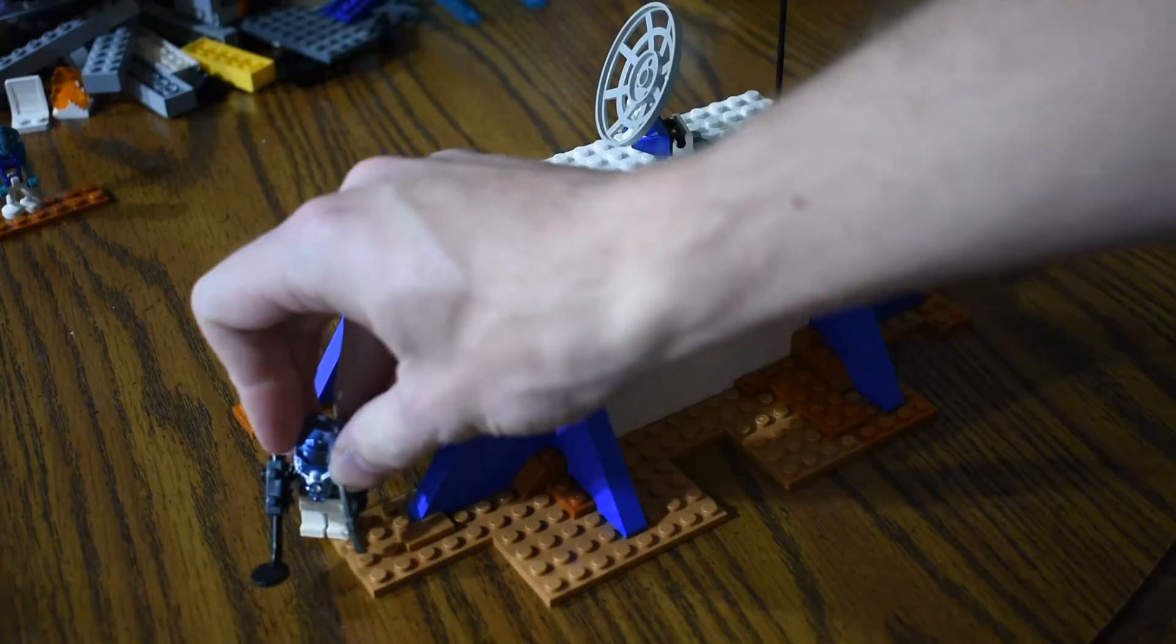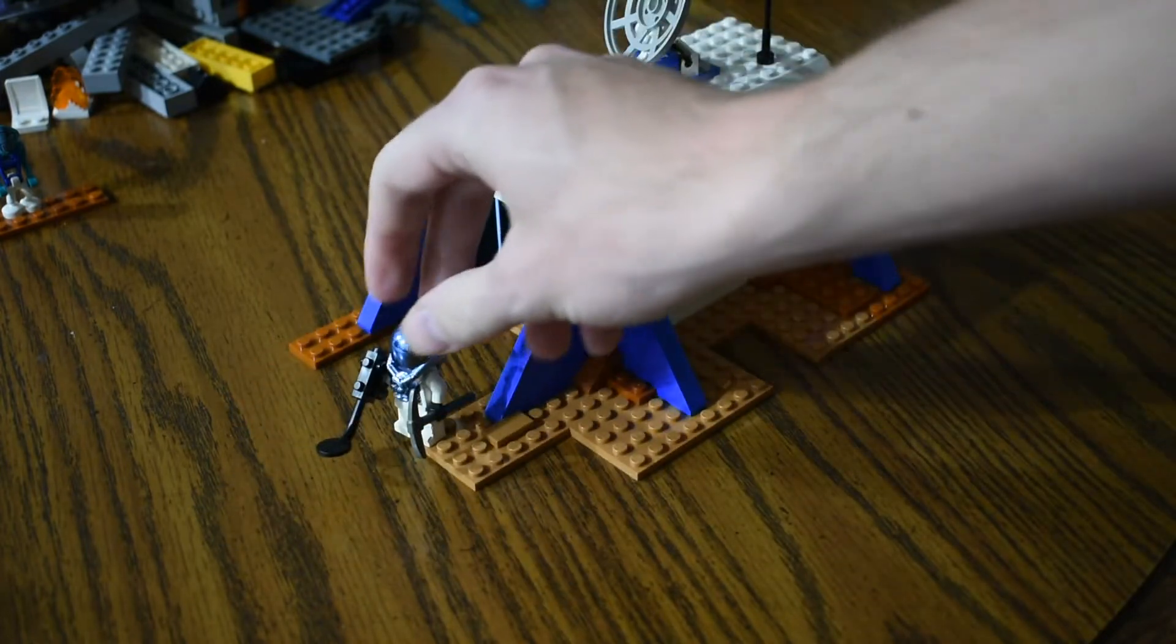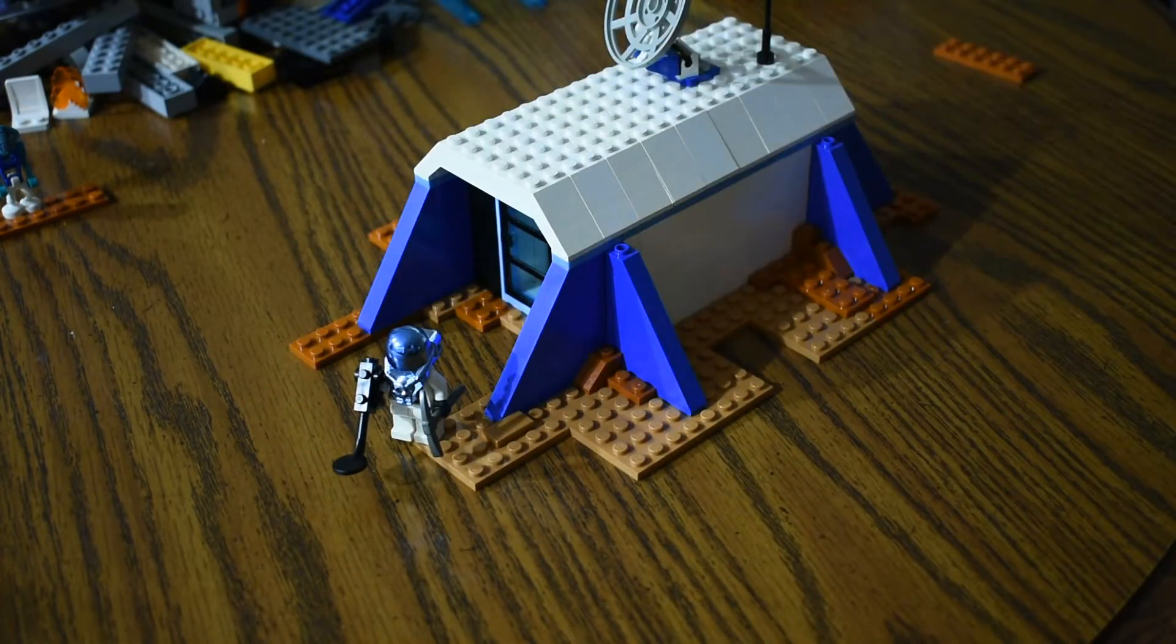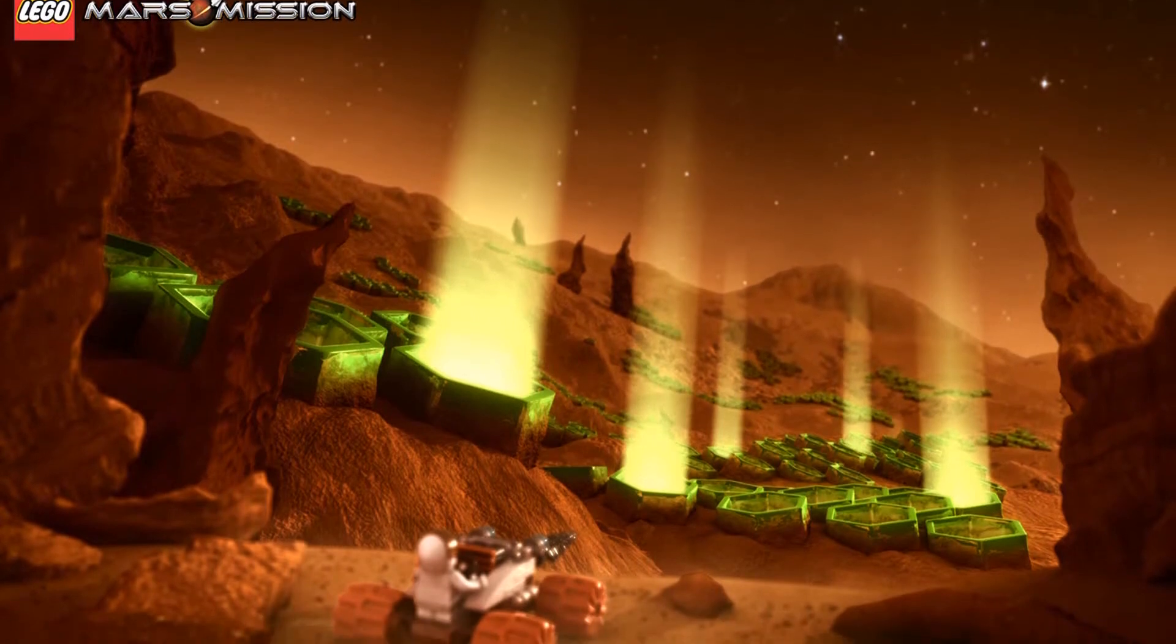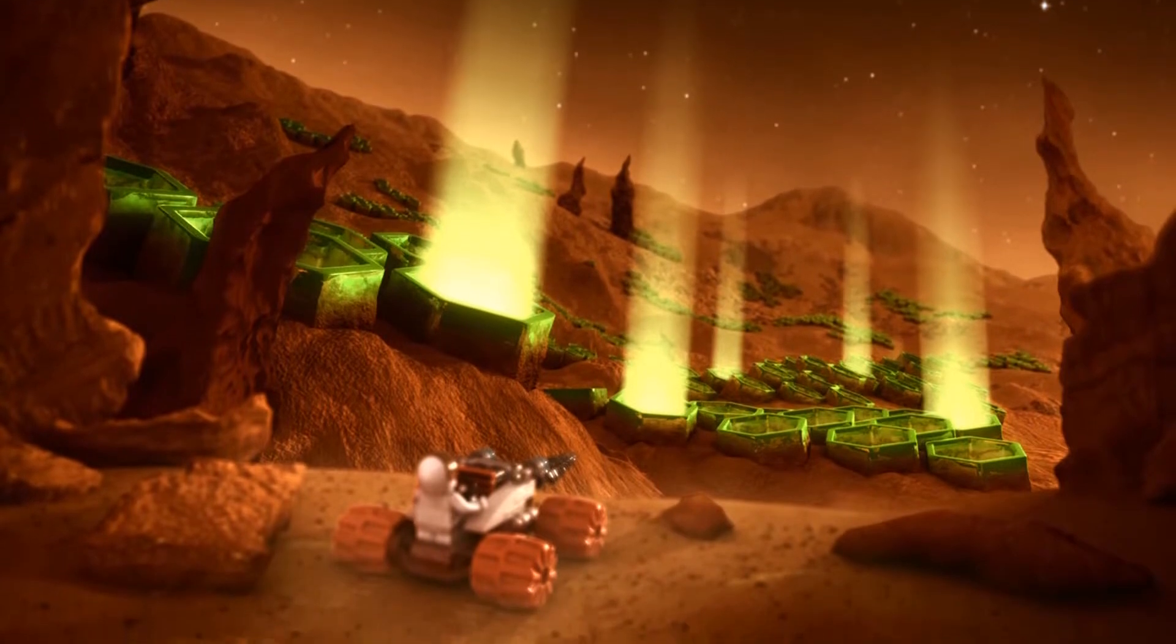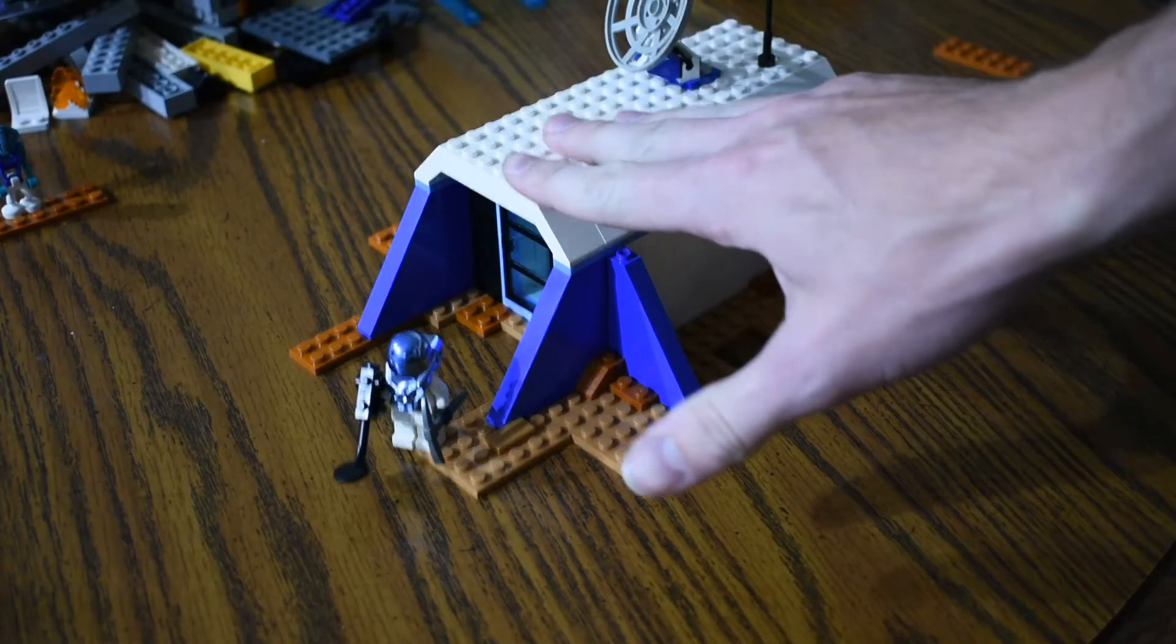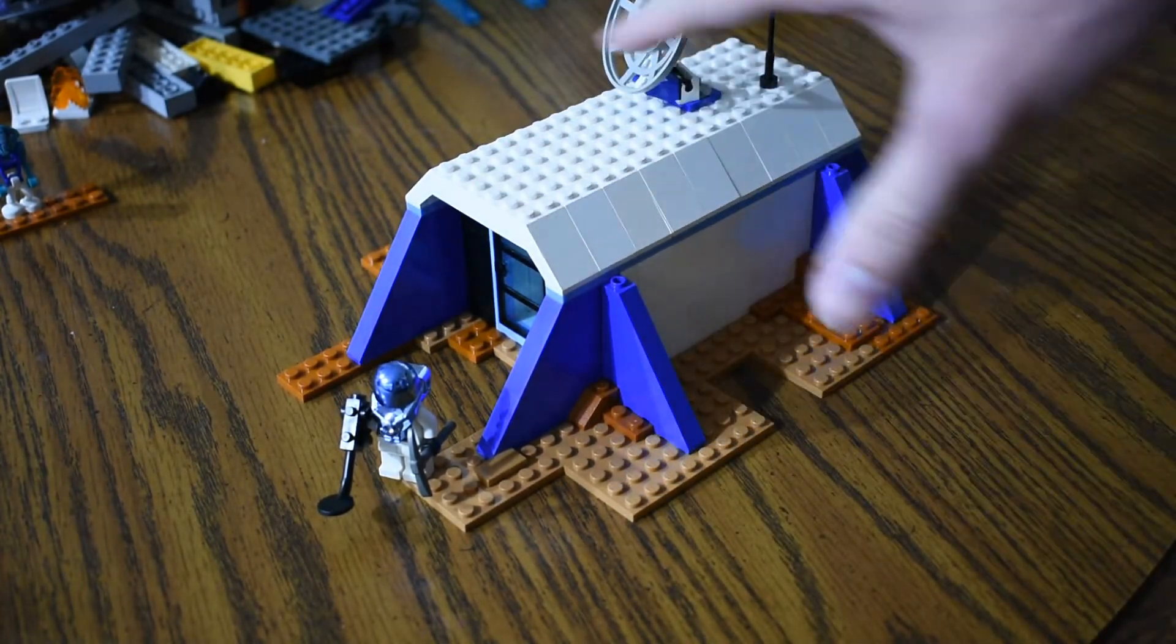I've got my appropriate minifig out here scouring for whatever they're looking for on Mars. I think it had something to do with energy crystals. There was another theme called Mars Mission back in the day. And that one definitely was more focused on harvesting these transparent neon green crystals out of the ground. So this actually predates that theme. And I don't know if there was an explicit objective that they were looking for.